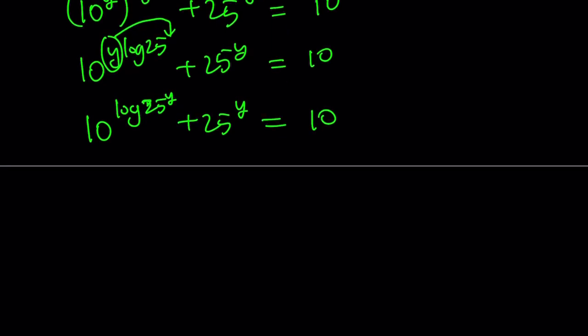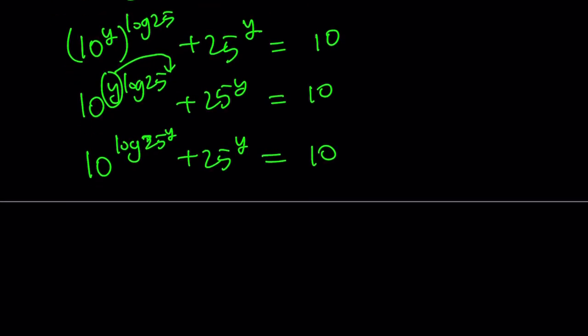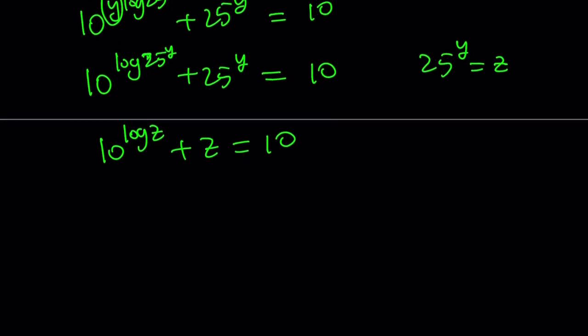That's kind of interesting. Because we ended up something like, at this point, if you want to call 25 to the power y something like, let's say, 25 to the power y is equal to z, you're going to get something like 10 to the power log z plus z equals 10. Isn't that interesting? We could probably proceed this way. We could also do it differently, but we could just proceed with this one.